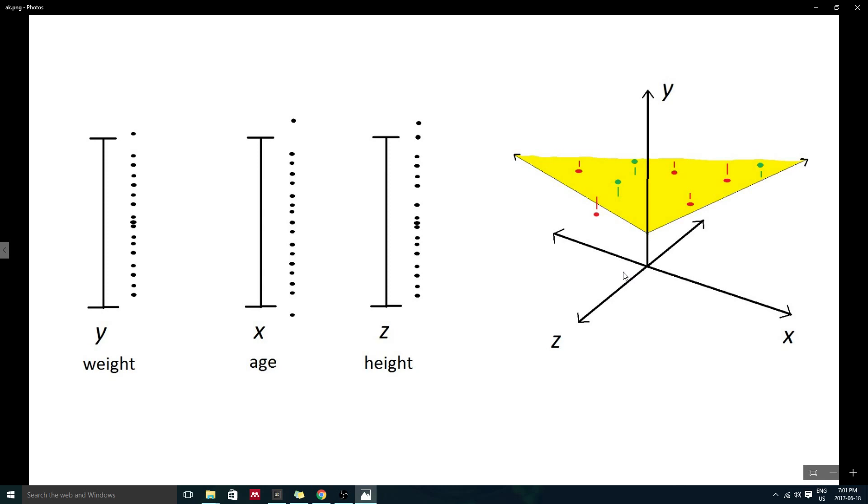Now we have a response surface, which is the three-dimensional synonym for a fitted line, represented in yellow. The main point I want you to observe is that now weight is graphed as a function of both height and age, and as either predictor increases, so does weight.